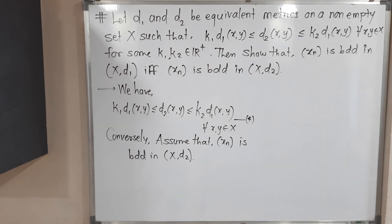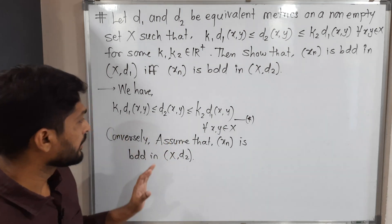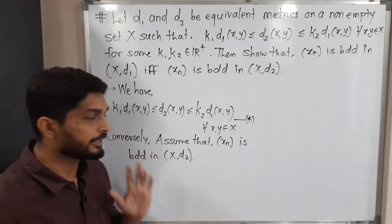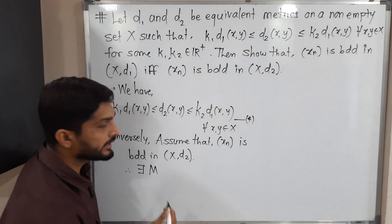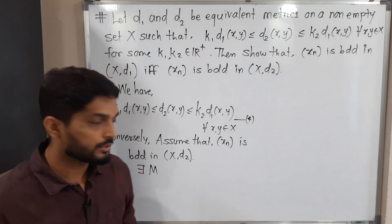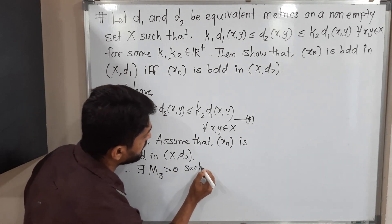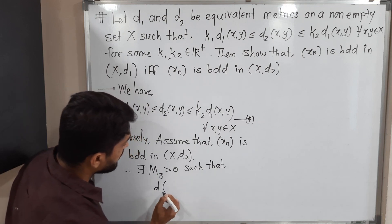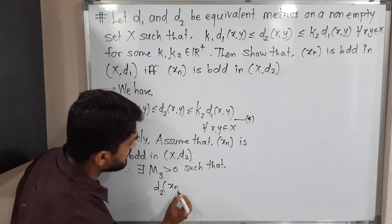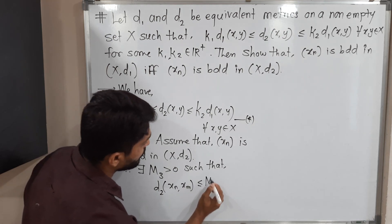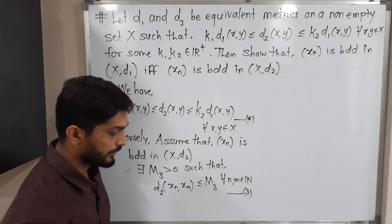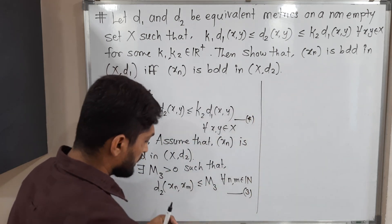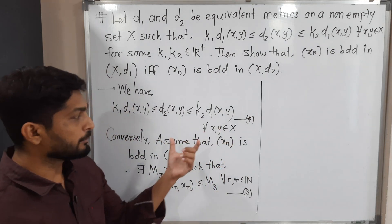Now we prove the converse. The star inequality remains as before. In the converse part we assume the sequence xn is bounded in (X, d2). By the definition of a bounded sequence, there exists m3 > 0 such that d2(xn, xm) ≤ m3 for all n, m belonging to the set of natural numbers. Let me call this inequality three.